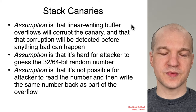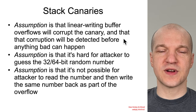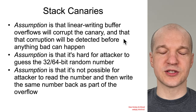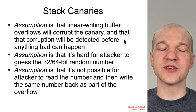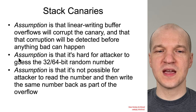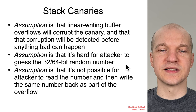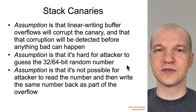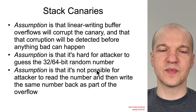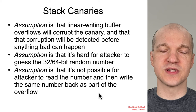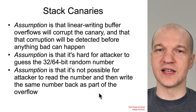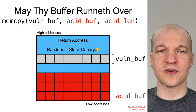If any of these assumptions are violated, the defense will not actually work — that's why it's called a mitigation and not a fundamental prevention mechanism. Another assumption is that it's hard for an attacker to guess the 32 or 64-bit random number, and another is that it's not possible for the attacker to read the value and write back the correct one.